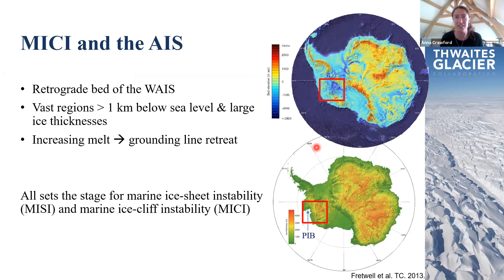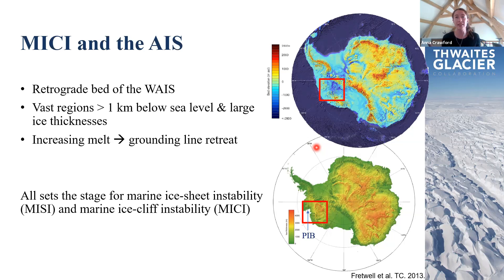Much attention is paid to the West Antarctic ice sheet due to its vulnerability to retreat via both marine ice sheet instability and marine ice cliff instability. The relevance of these maps becomes clearer in terms of MICI concern: as we retreat over retrograde beds into regions of very thick ice, the risk of exposing ever-greater ice cliffs grows. These retrograde slopes and retreat along them into thick ice can make runaway retreat via MICI possible — though we shouldn't assume it will always happen.